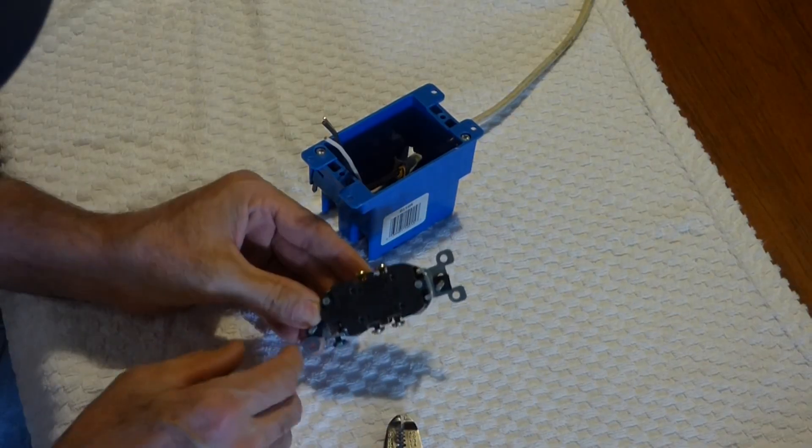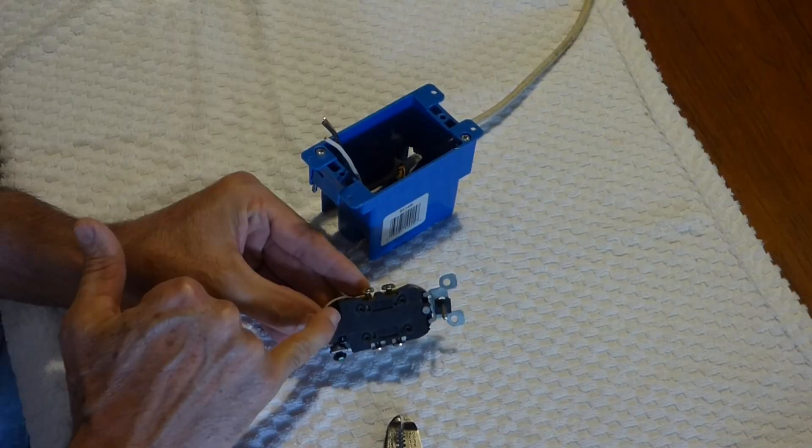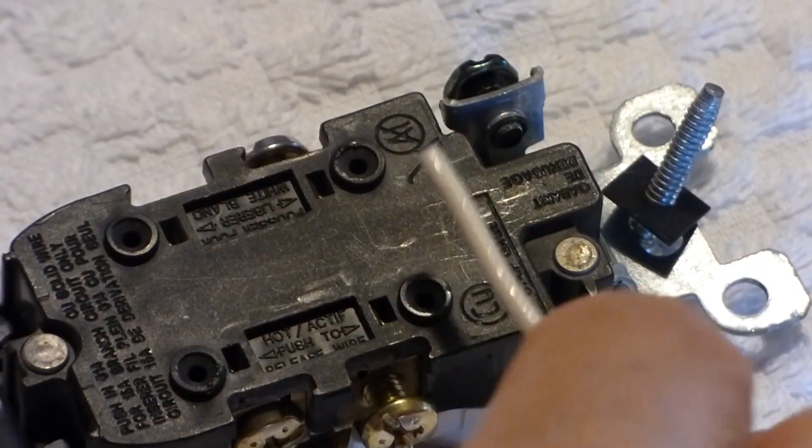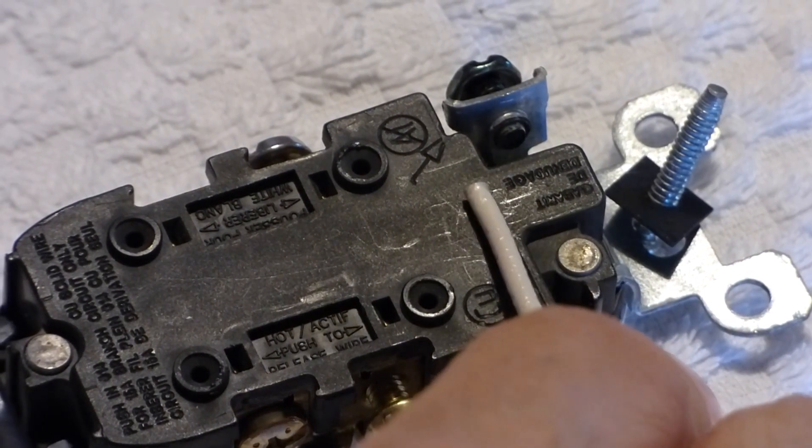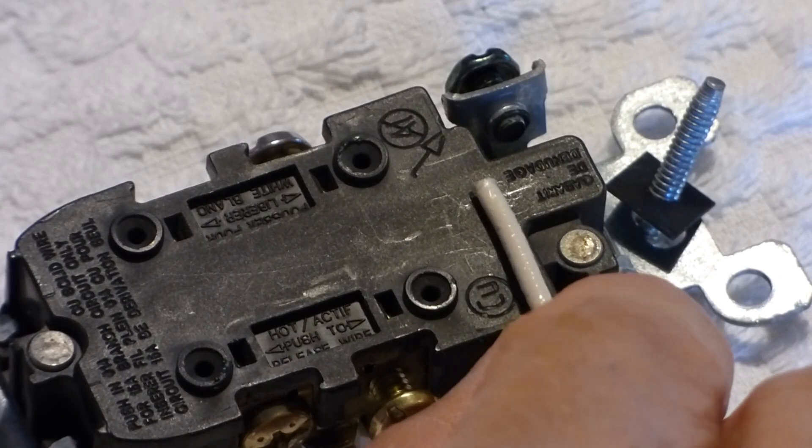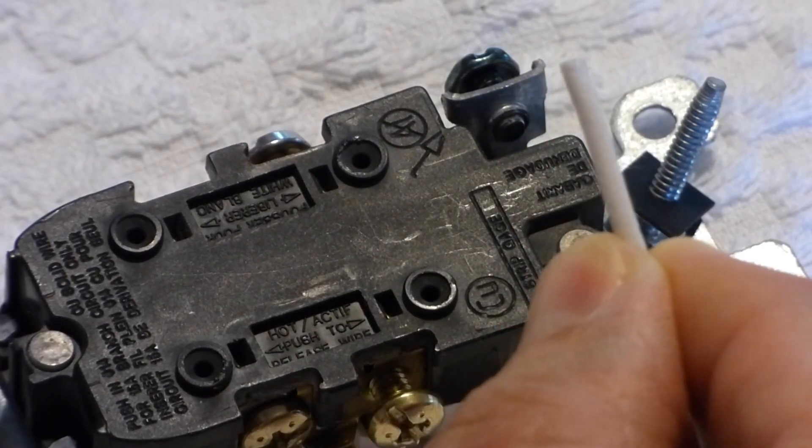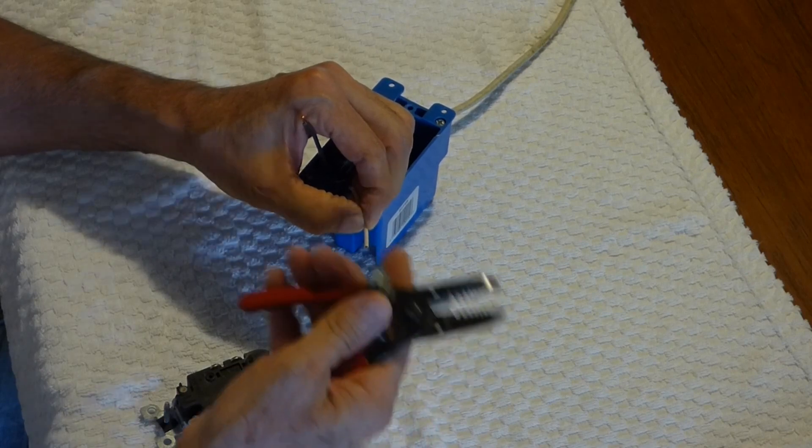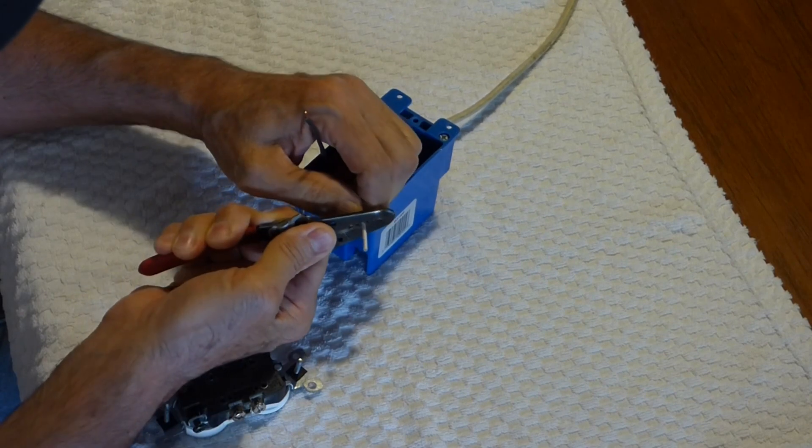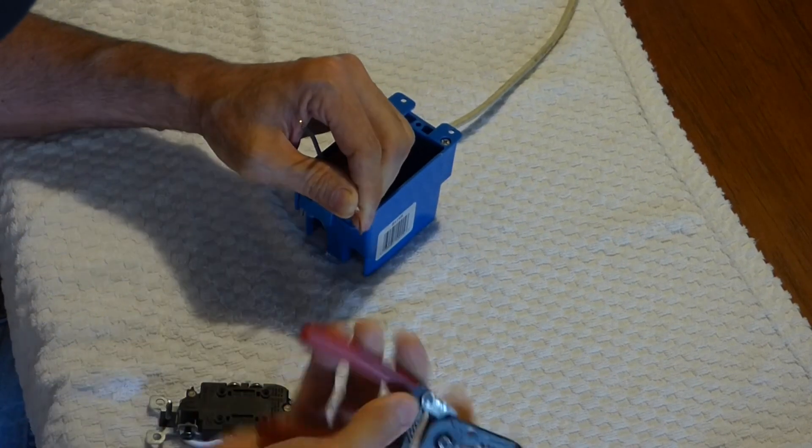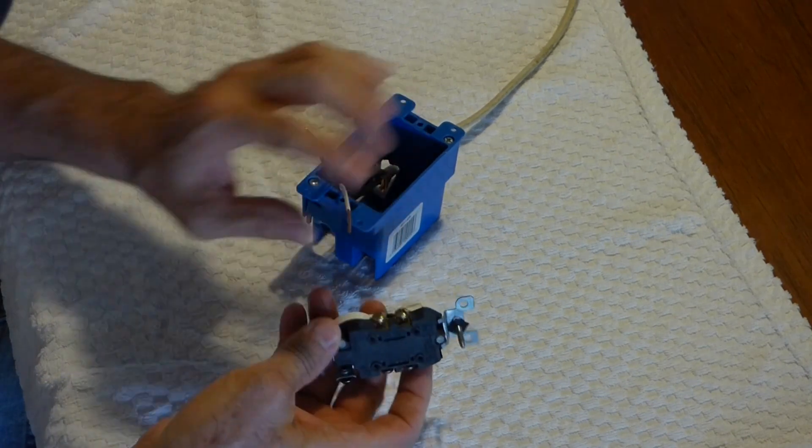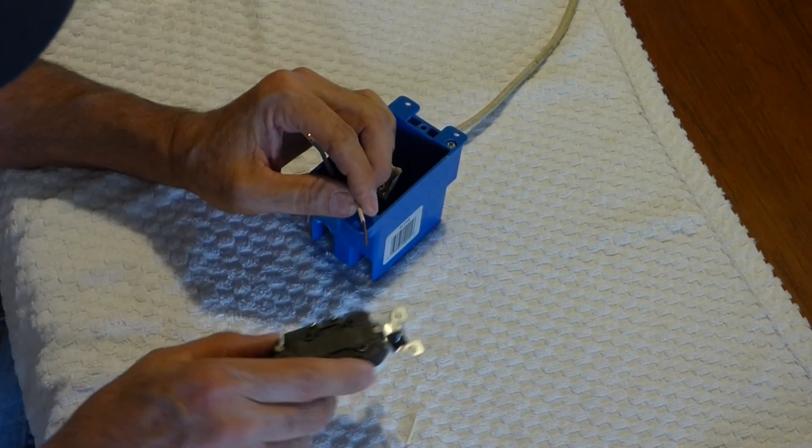Now on the back of the receptacle, and some will be indented, is a stripping gauge. It's 5 eighths of an inch long. What you do is take your wire, put it against the stripping gauge, and you can hold your finger in place. Take your wire stripper, line that up with the 14, wrap it around, hold the wire, and pull that off. That gives you the perfect length for securing the wire onto the receptacle.